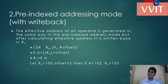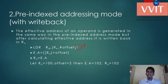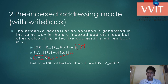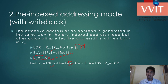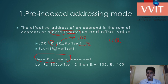The second addressing mode is pre-indexed with write back. It is the same as the previous pre-indexed mode, but as we can see in the notation, there is an exclamatory mark. In the pre-indexed addressing mode, the Rn value is preserved, whereas here the Rn value is overwritten with the effective address. Consider the same example: if Rn is equal to 100 and offset is equal to 2, then the effective address becomes 102, and since EA overwrites Rn, Rn also becomes 102. In the previous case Rn remained 100, but here it becomes 102.